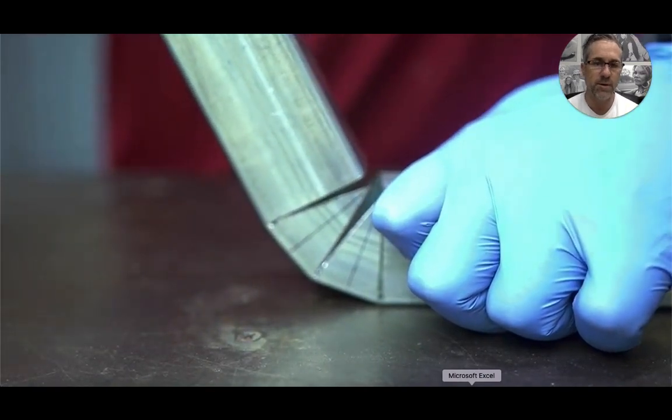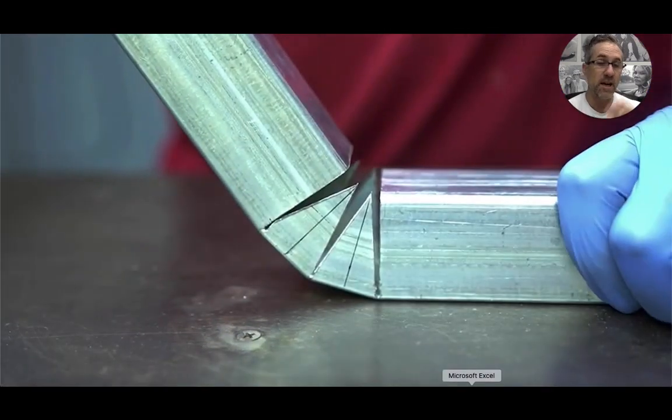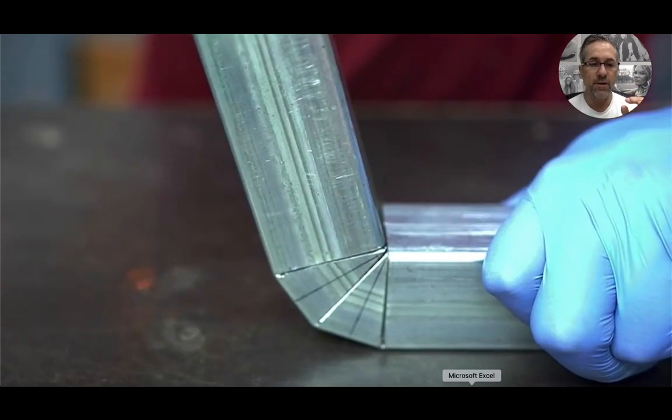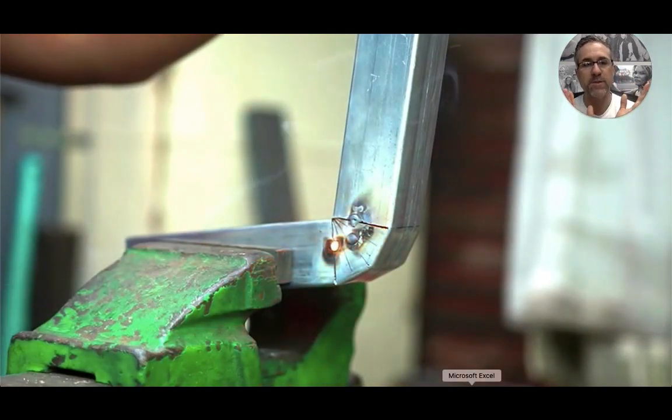there's a couple different ways to do them. Some you can put in a machine and actually roll them out. Others, you can cut out pie shapes and then bring them together and make these bends.